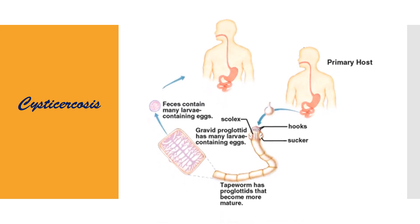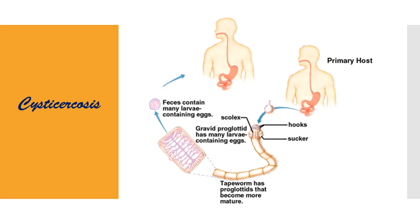Let's understand cysticercosis with the help of this diagram. An adult Taenia solium lives in the primary host, and proglottids full of onchospheres come out of this host along with feces. If this feces is present in a crop field, the onchospheres will reach the soil and stick to vegetables like spinach, coriander leaves, and cabbage. If these vegetables are consumed by a human without washing them properly, the onchospheres reach the small intestine, larvae hatch from the cyst, and are distributed throughout the body through blood circulation.